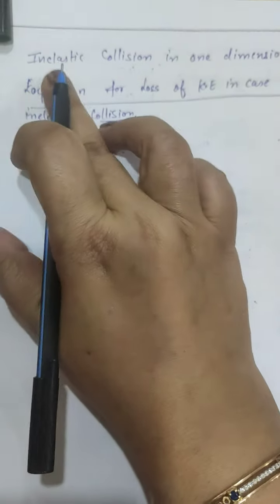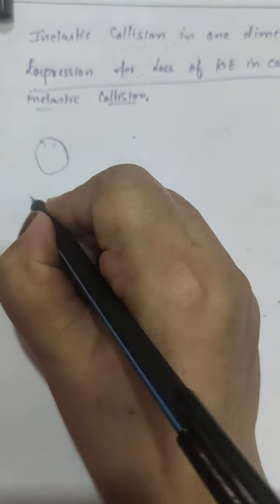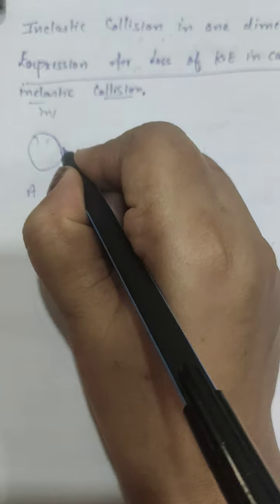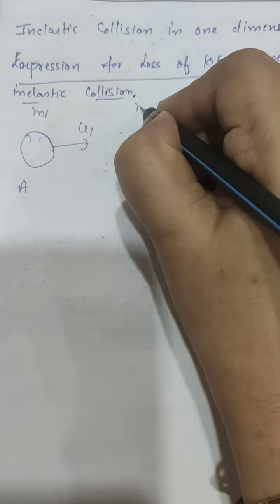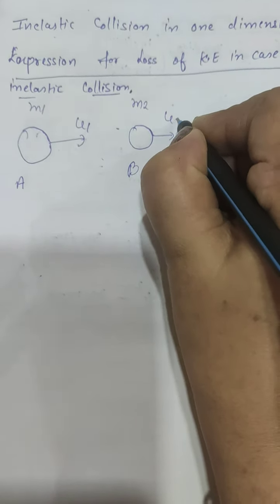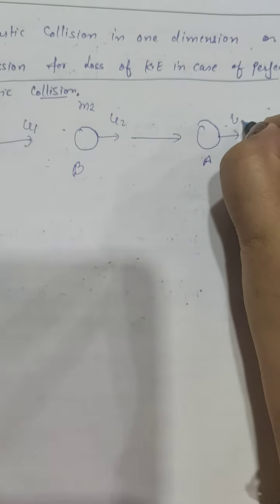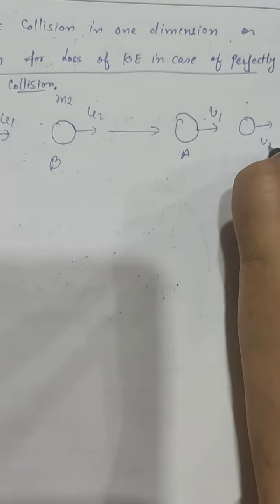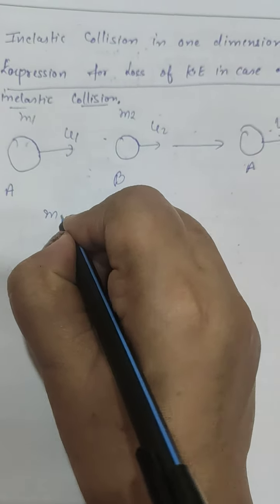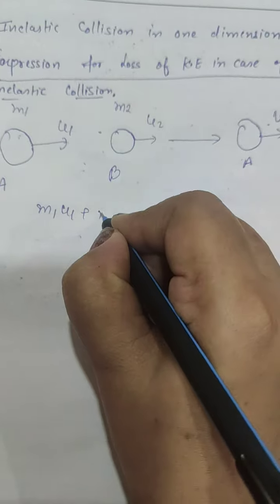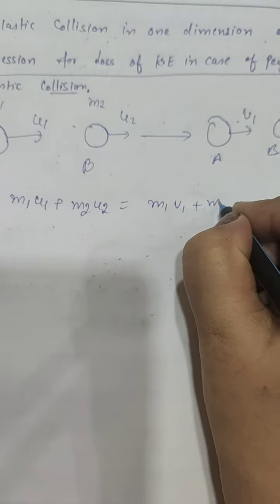Applying conservation of linear momentum, let us consider two bodies: body A having mass m1 moving with velocity u1, and body B of mass m2 moving with velocity u2. After collision, body A has velocity v1 and body B has velocity v2. Applying conservation of linear momentum: initial momentum m1·u1 + m2·u2 equals final momentum m1·v1 + m2·v2.